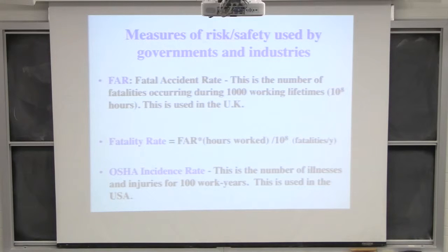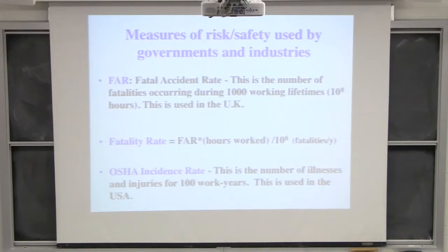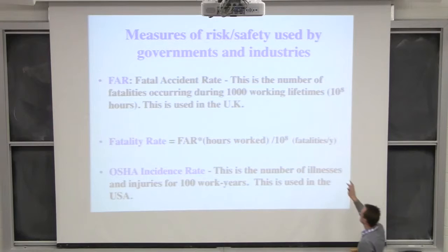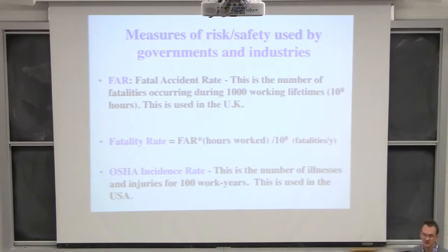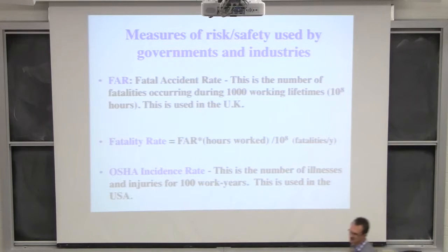So maybe three out of those thousand were killed — that's the fatal accident rate: the number of fatalities in a thousand people's working lifetimes. If we take that number, we can multiply it by the number of hours worked divided by 10 to the 8, and that gives you the fatalities per year. I'll show you a calculation for that. That's the rate at which people have these incidents occurring.